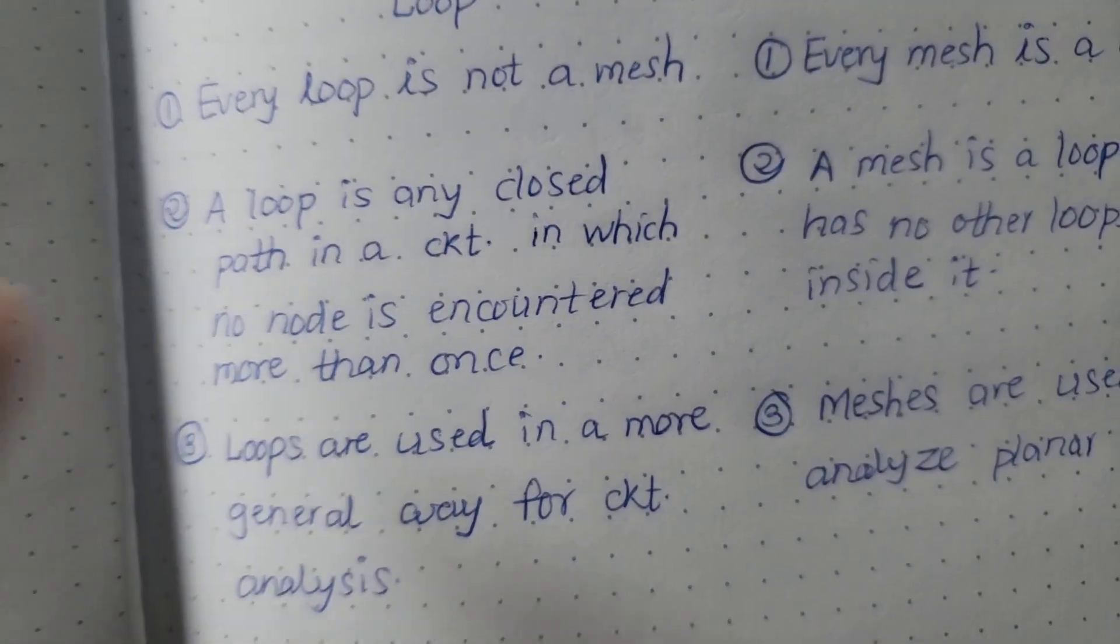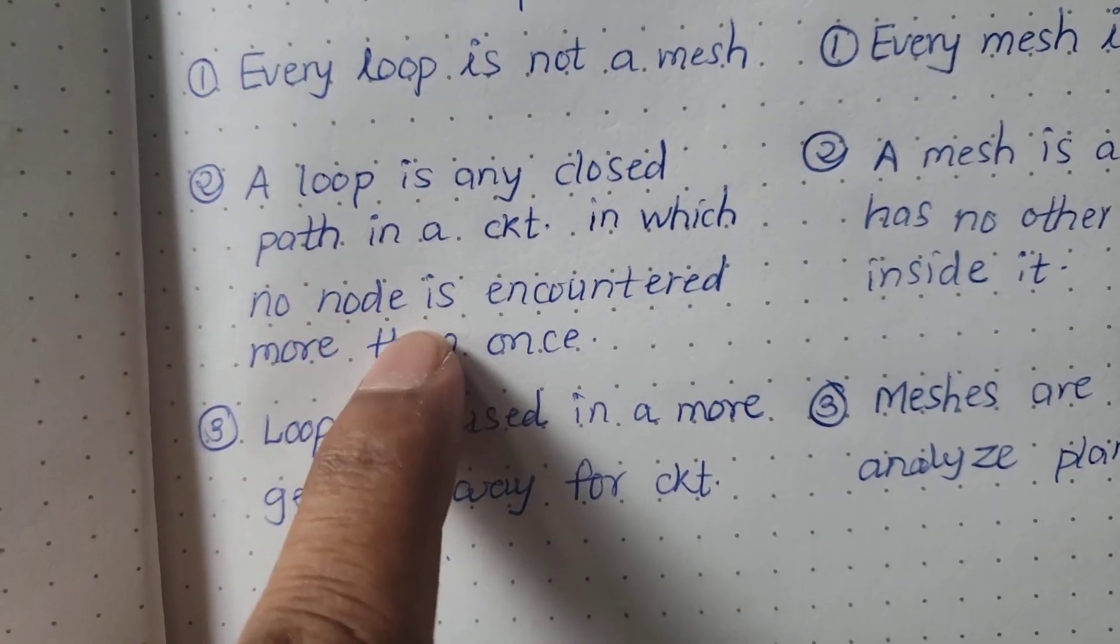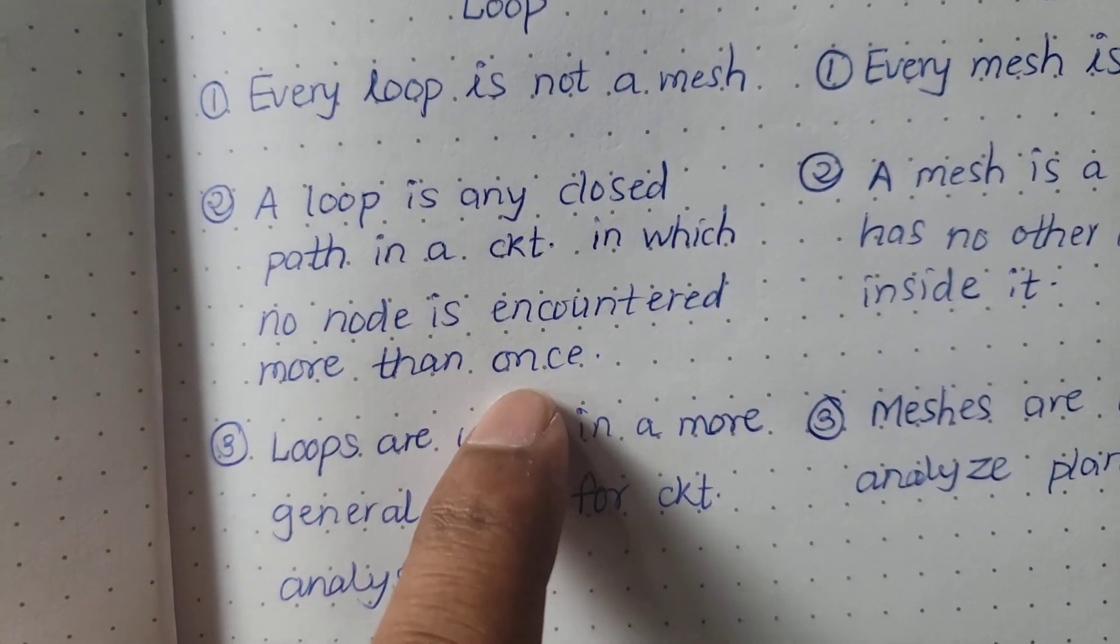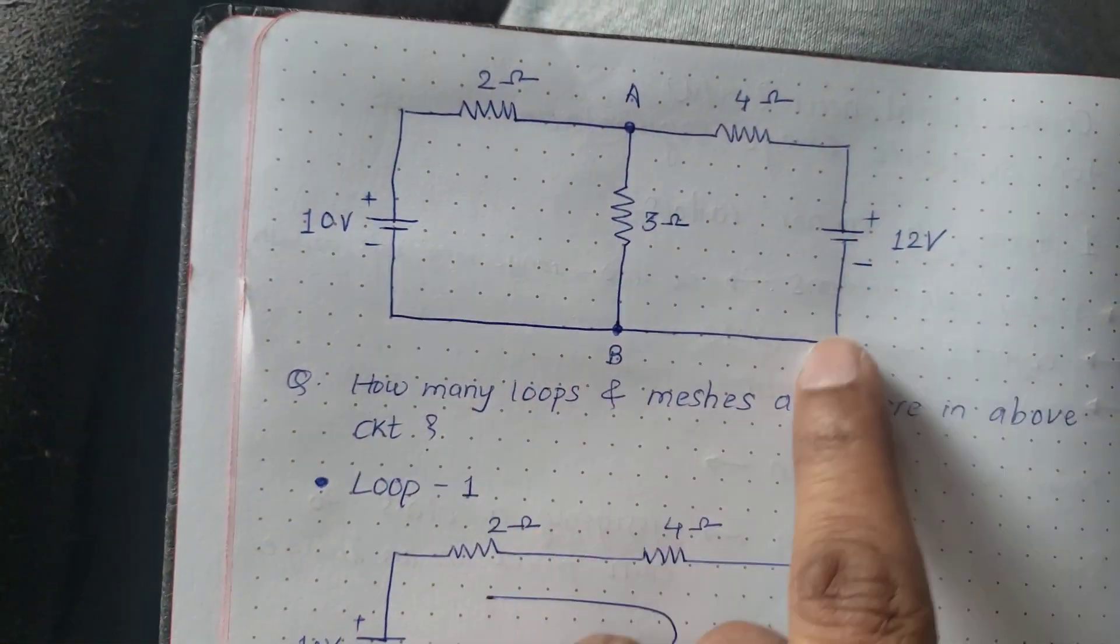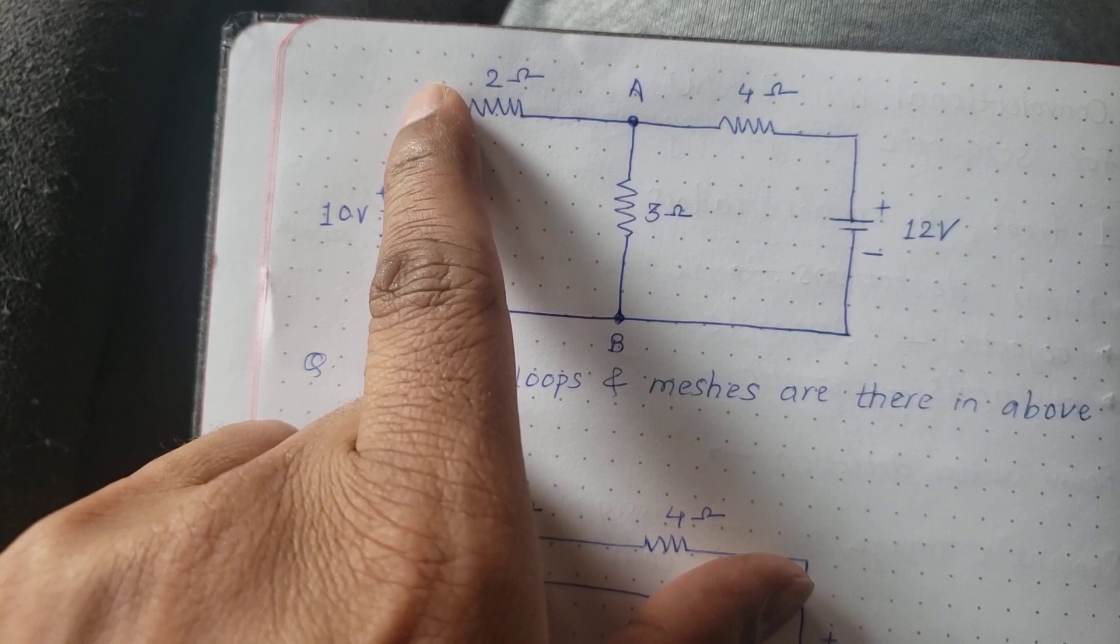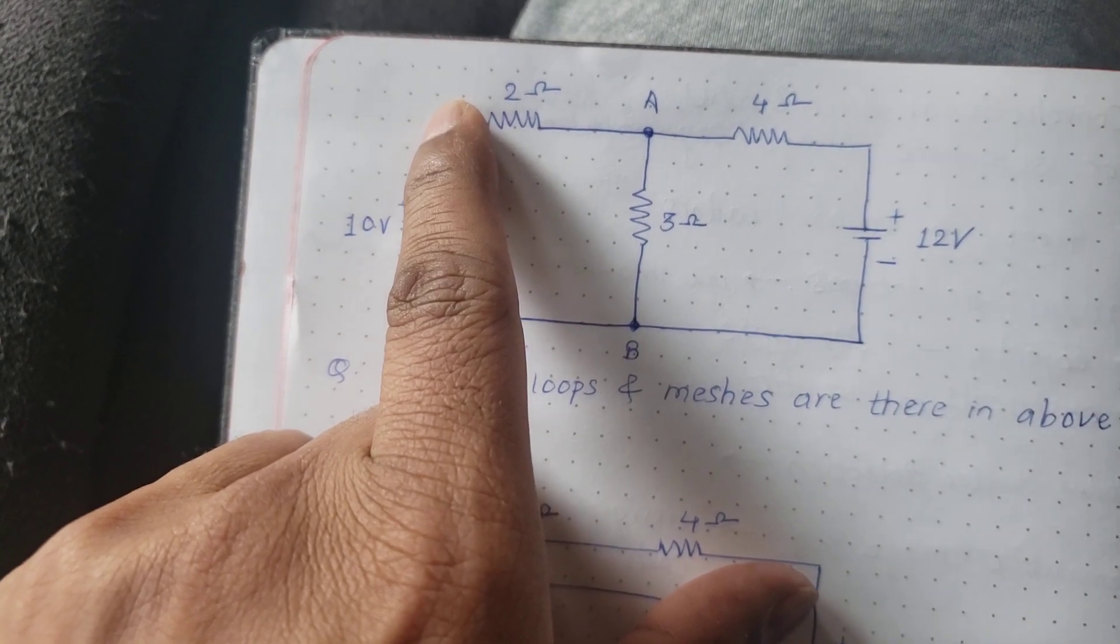The basic thing is it should be a closed path, and no node should be encountered more than once. Here we are just traversing from here and ending here, so that's why we can say this is a loop.